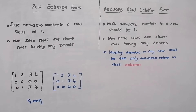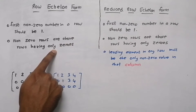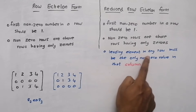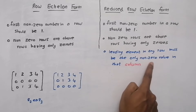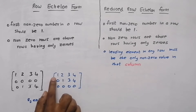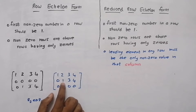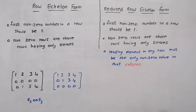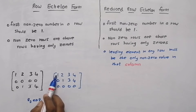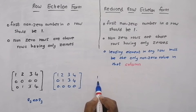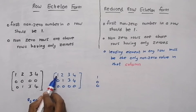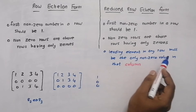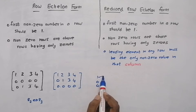Now, in reduced row echelon form, the first two conditions are the same as in row echelon form, and we have one more condition: the leading element in any row must be the only non-zero value in that column. So the leading element of row 1 is 1 — consider that column. That value should be the only non-zero value in that column.